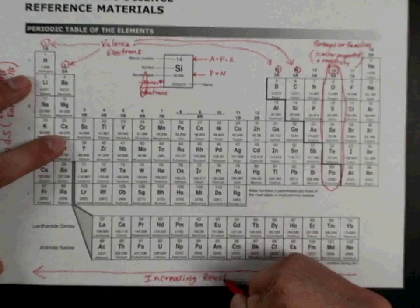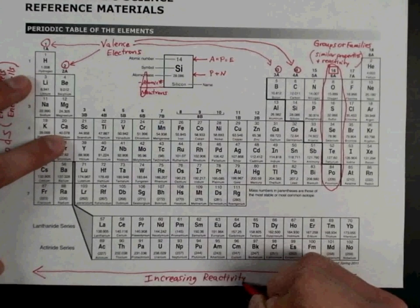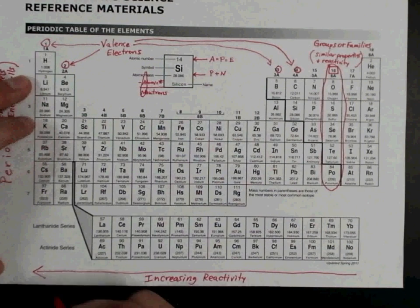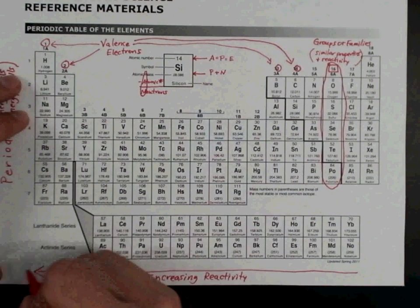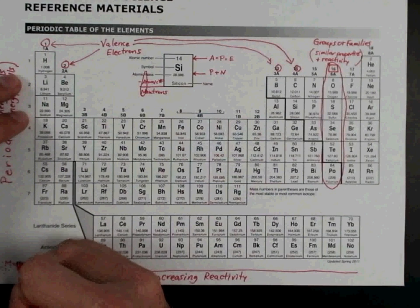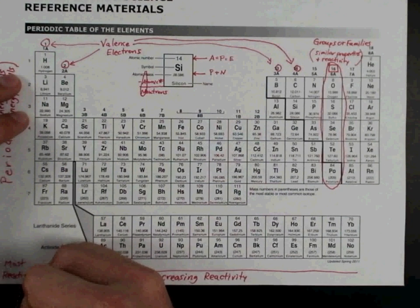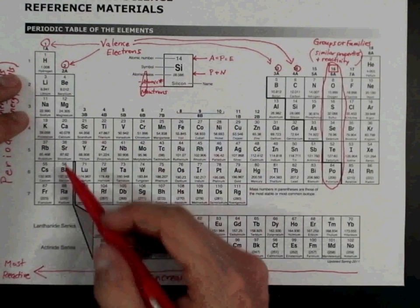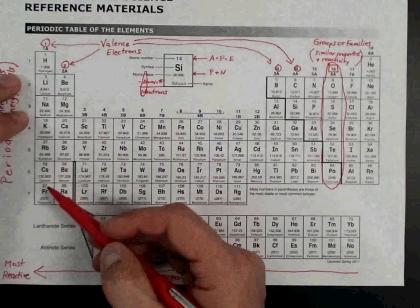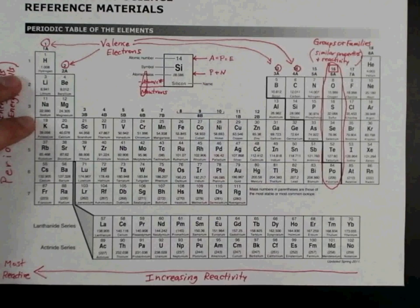The most reactive group or family on the periodic table is group one. So I'm going to just put a little most reactive down there, just so I know that those are highly reactive. They have one valence electron, and they want to give that thing away as fast as possible. They react very violently with a lot of different other elements.